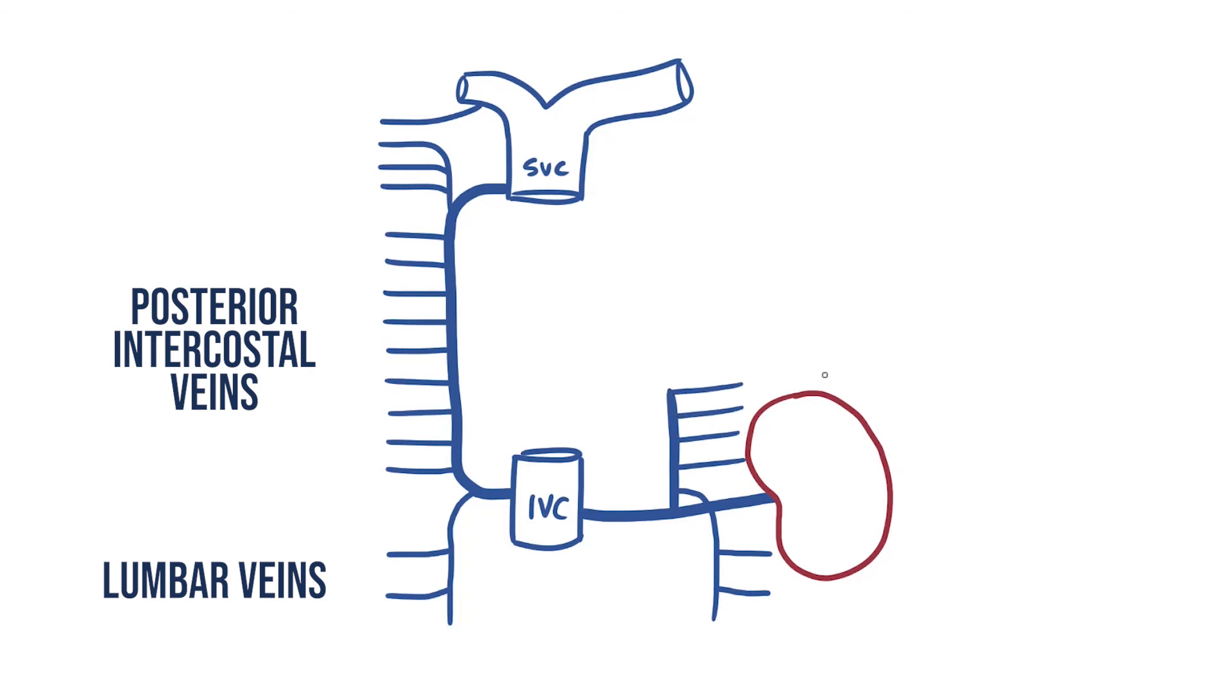However this time it won't travel all the way through the thorax. Instead it stops at around T8, crosses the midline and then drains into the azygos. This leaves us with a structure that's similar but only about half as long as the azygos vein. And so we call it the hemi-azygos vein.